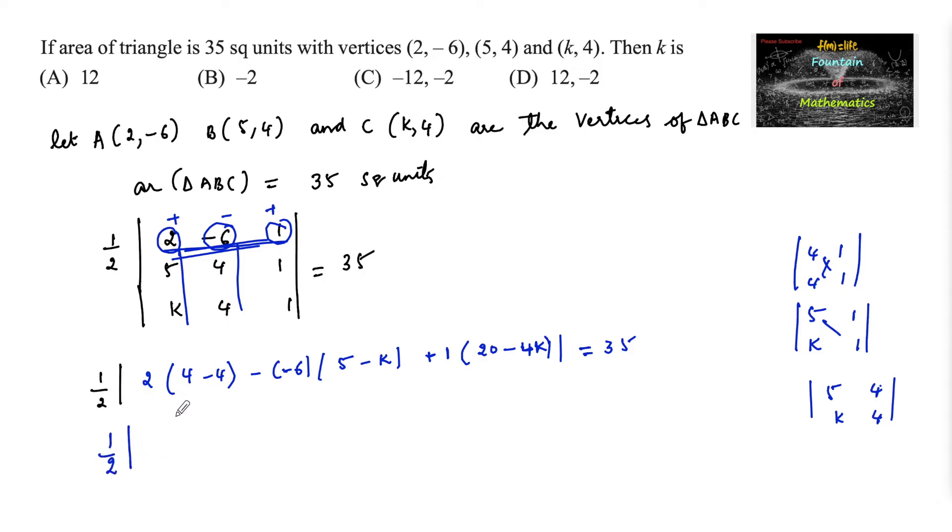On simplifying, one-half times mod of 4 minus 4 is 0, 2 into 0 is 0, minus of minus is plus, so 6 times (5 minus k) plus 1 times (20 minus 4k) equals 35.